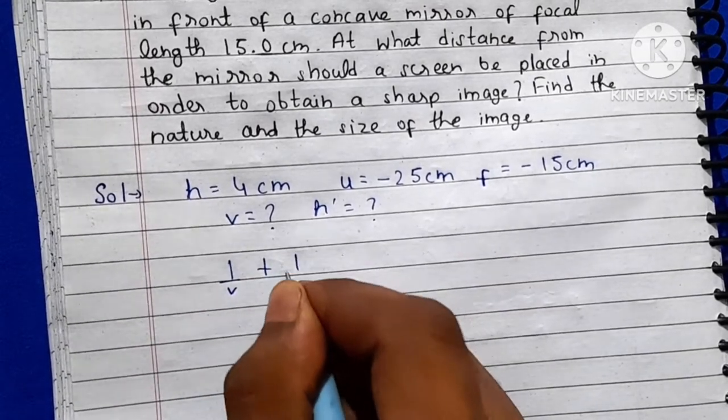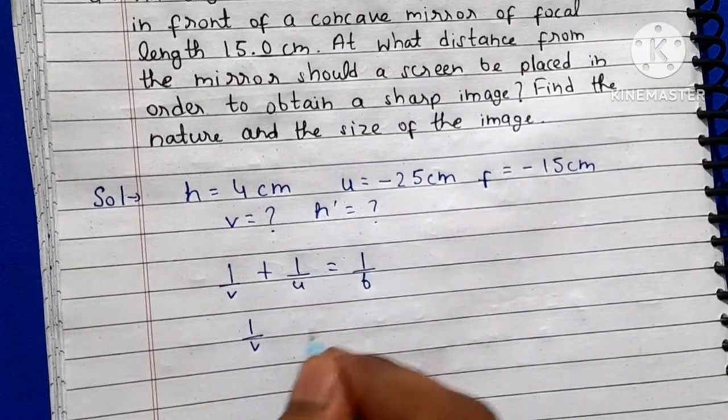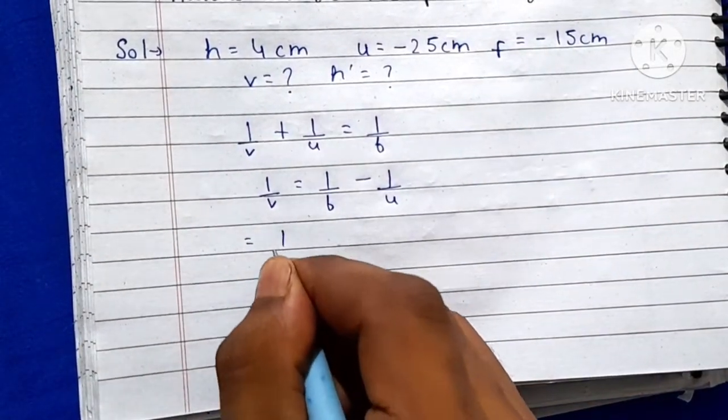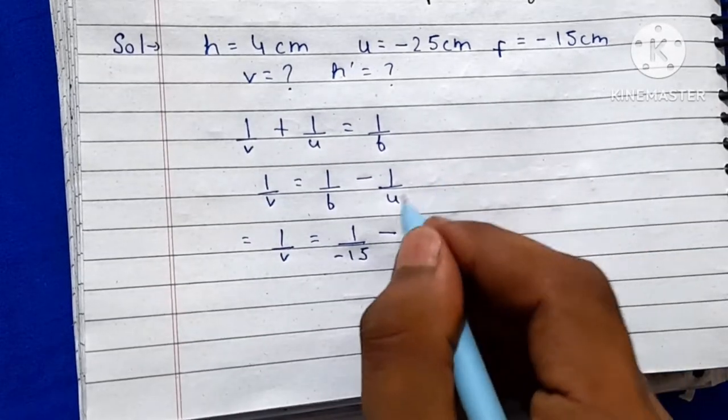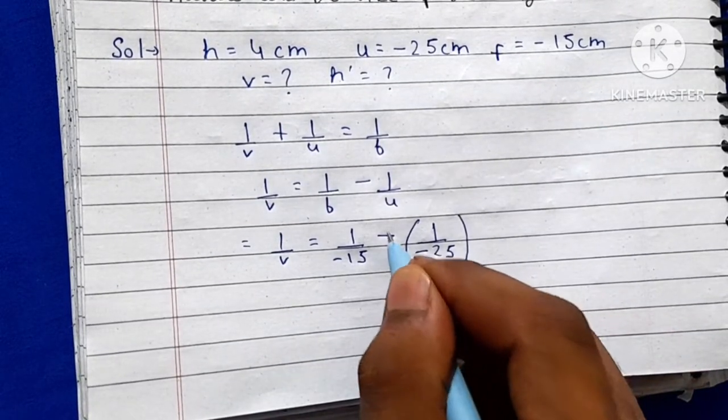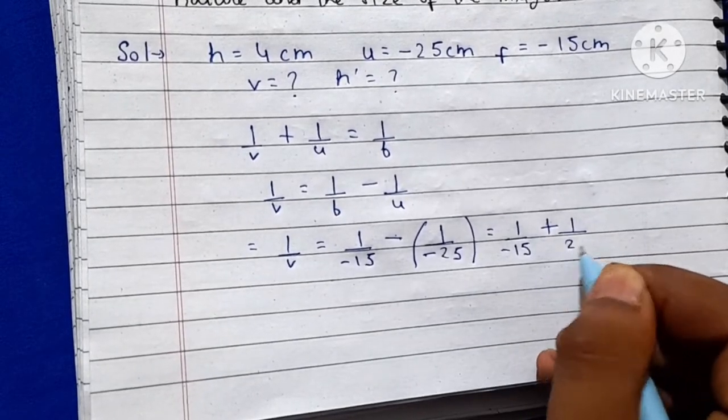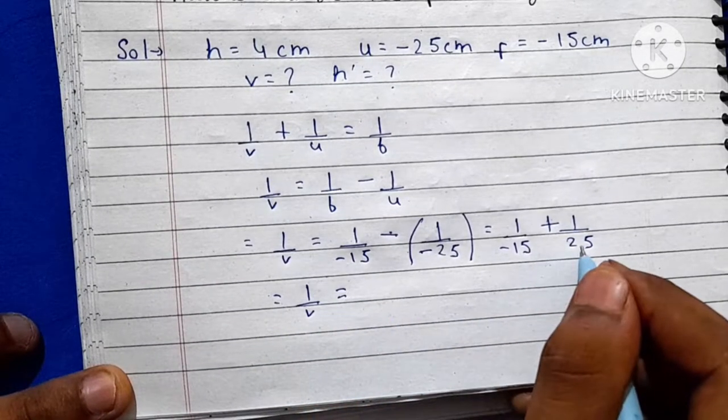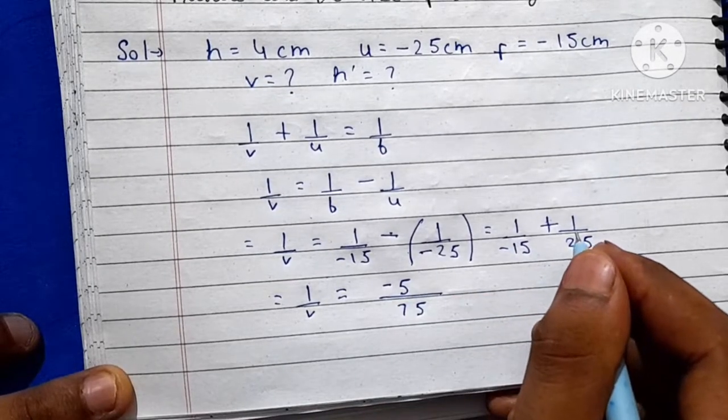1/v + 1/u = 1/f. We will find out v, so 1/v = 1/f - 1/u. So here are our values: 1/v = 1/(-15) - 1/(-25), so this is -1/15 + 1/25. Now here we will take LCM. 1/v = -5 + 3 / 75, which equals -2/75.